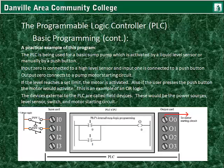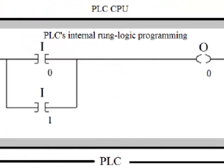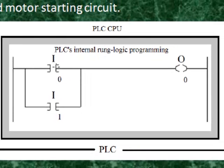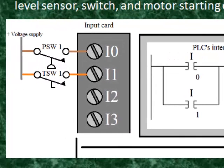Input 0 is connected to a high level sensor. When it gets lifted up by the rising water level, it closes, giving a supply voltage into input 0. This makes the internal program's input 0 true, so it closes, and the output is activated as the imaginary current flows through the closed contact. Because input 0 is true, current flows to output 0, making it true, thus generating a voltage that goes to the motor starting circuit.